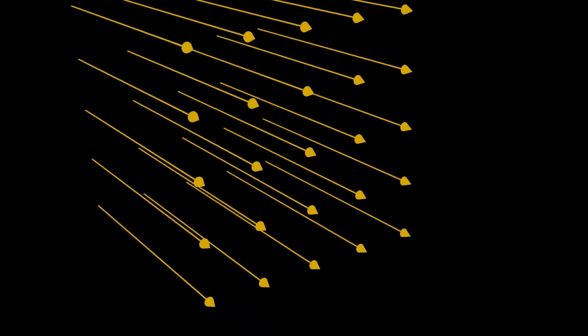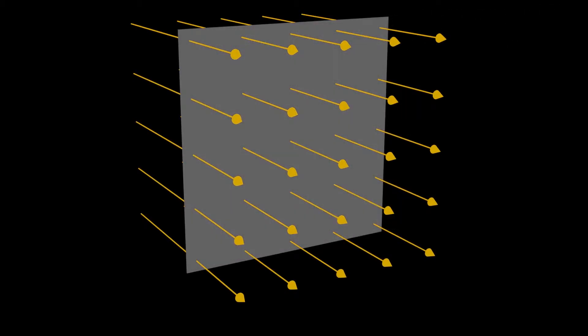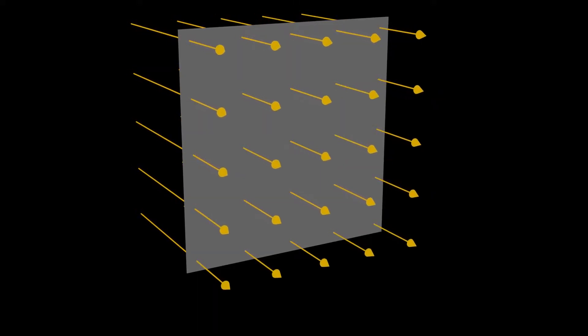This is just a fancy way of saying the electric field is constant at all points in space. Now consider some area in space — you could imagine this like a flat sheet of paper or a flat sheet of any kind. The electric field permeates this area like this.